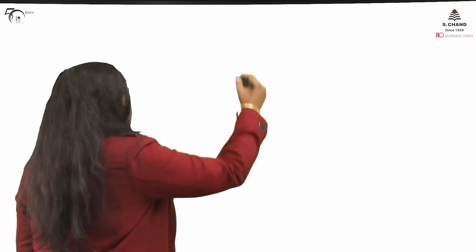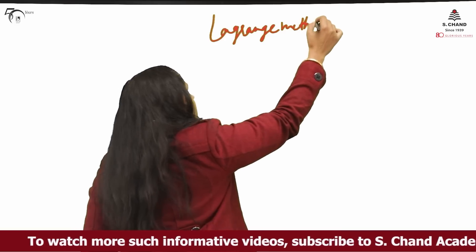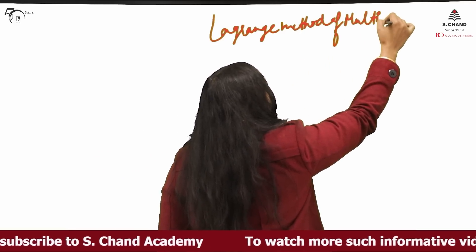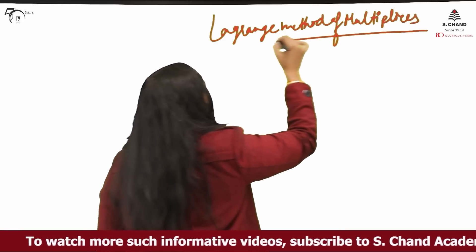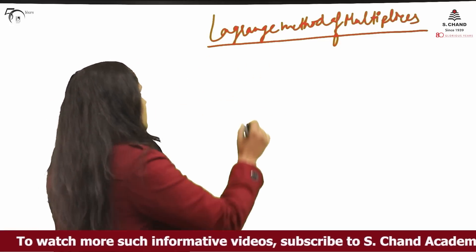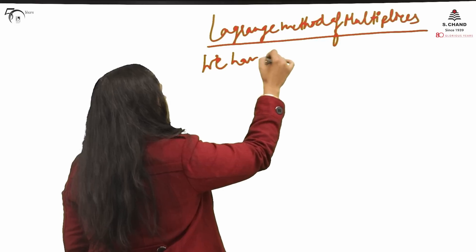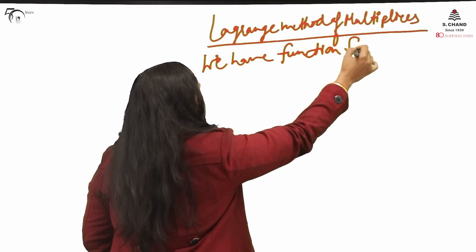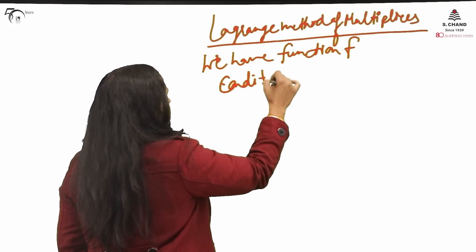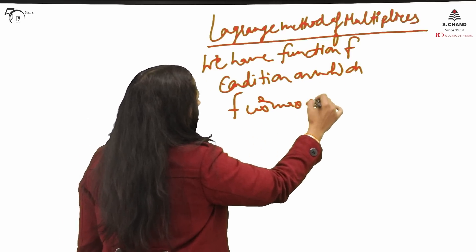First, I will explain you the procedure — what exactly is the Lagrange method of multipliers. Then I will take up examples to explain it. In Lagrange method of multipliers, there is no condition on variables right now. You will have one function f, and then a condition on which f is maxima or minimum.